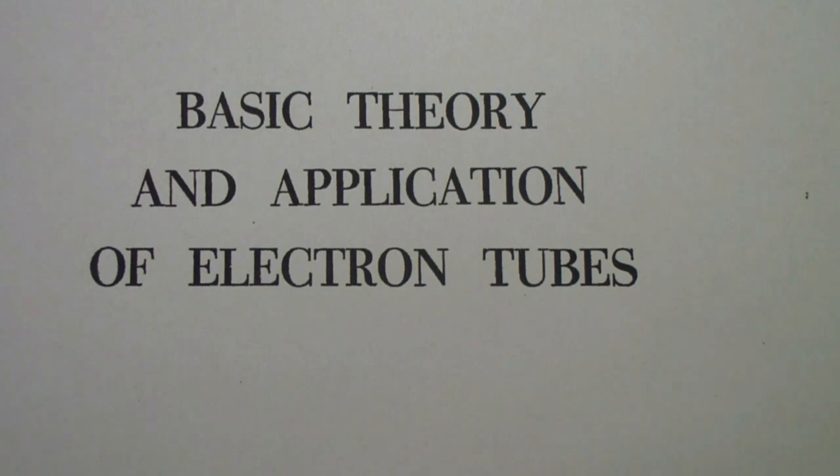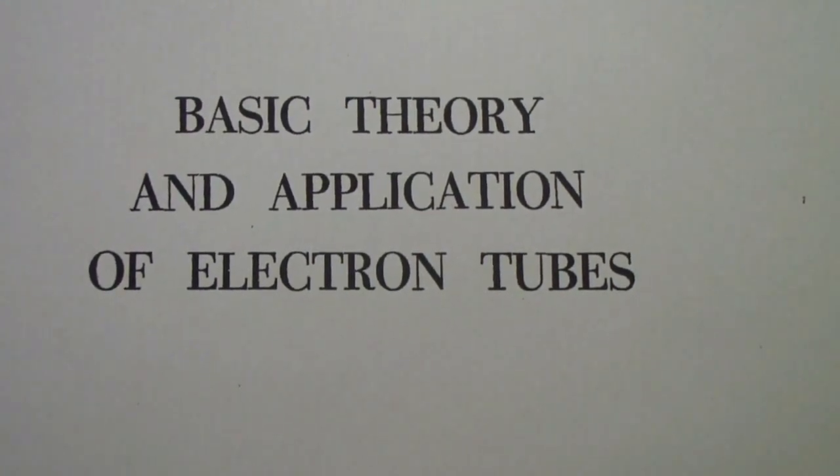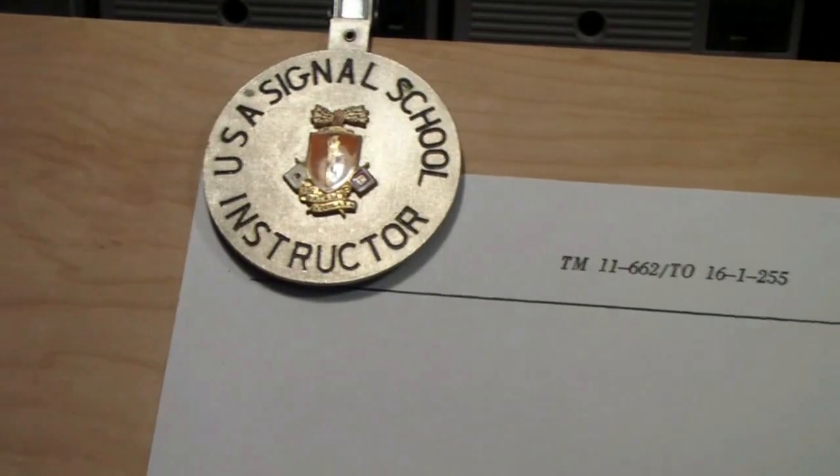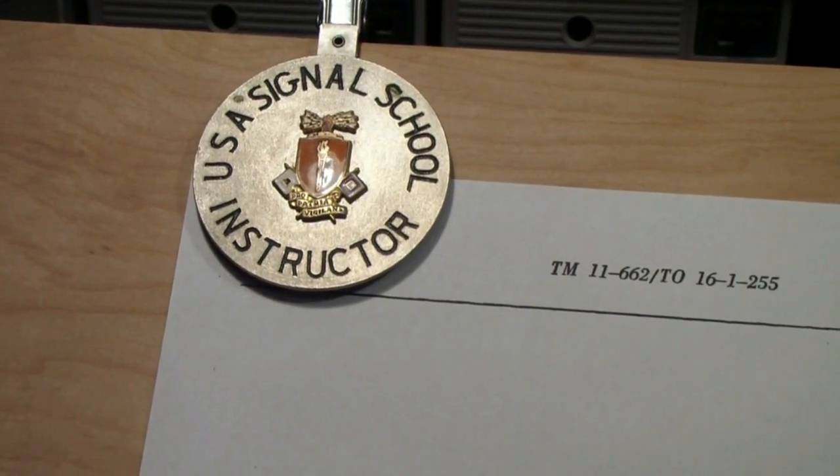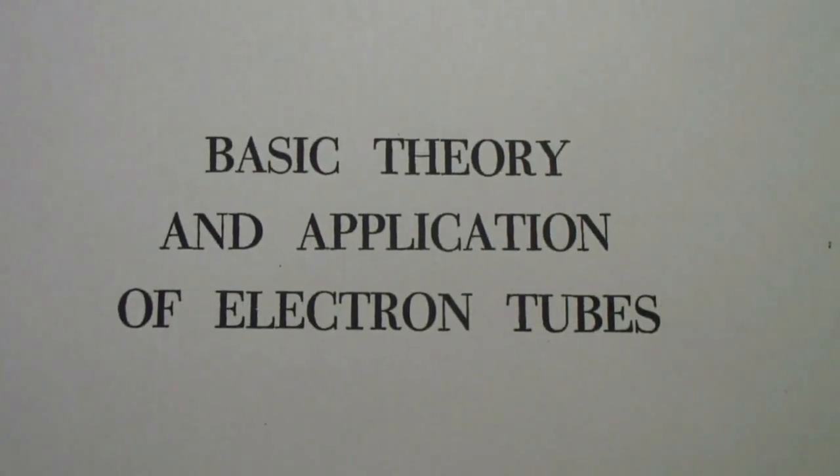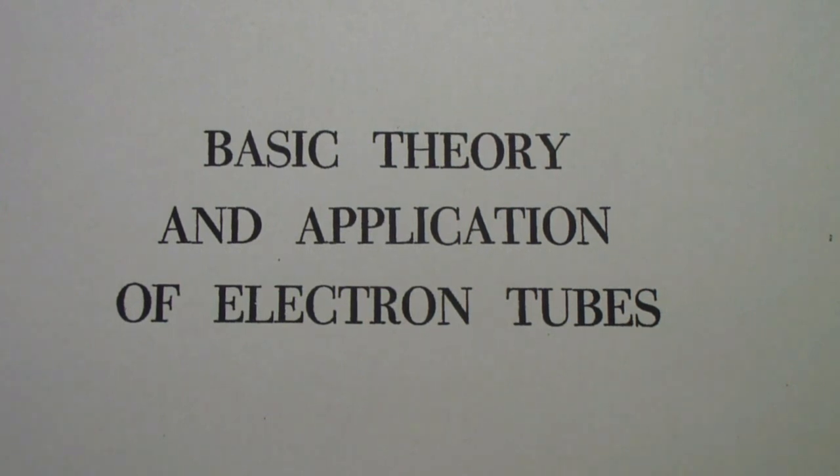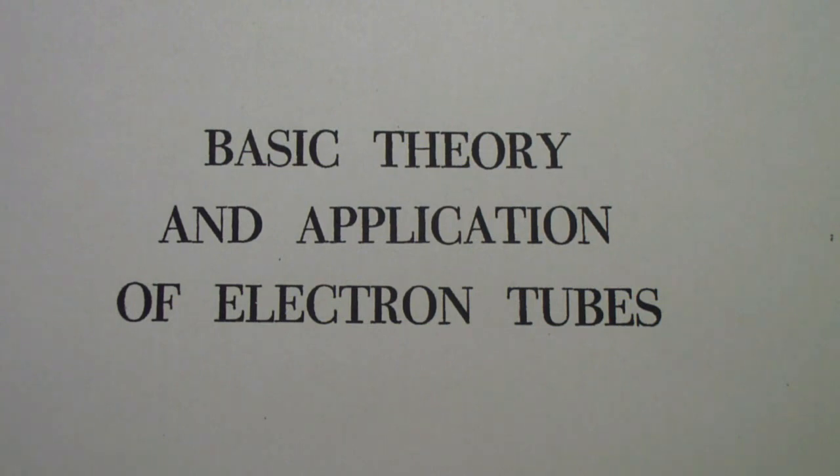A little later, I wound up teaching a course on electron tubes that came from this technical manual, an Army technical manual. The place I was teaching was the Army Signal School at Fort Monmouth in New Jersey. This particular technical manual was published in 1952 and was intended to train Army Radio Repair Technicians. I'm only going to be using simple mathematics: add, subtract, multiply, divide. That's it.